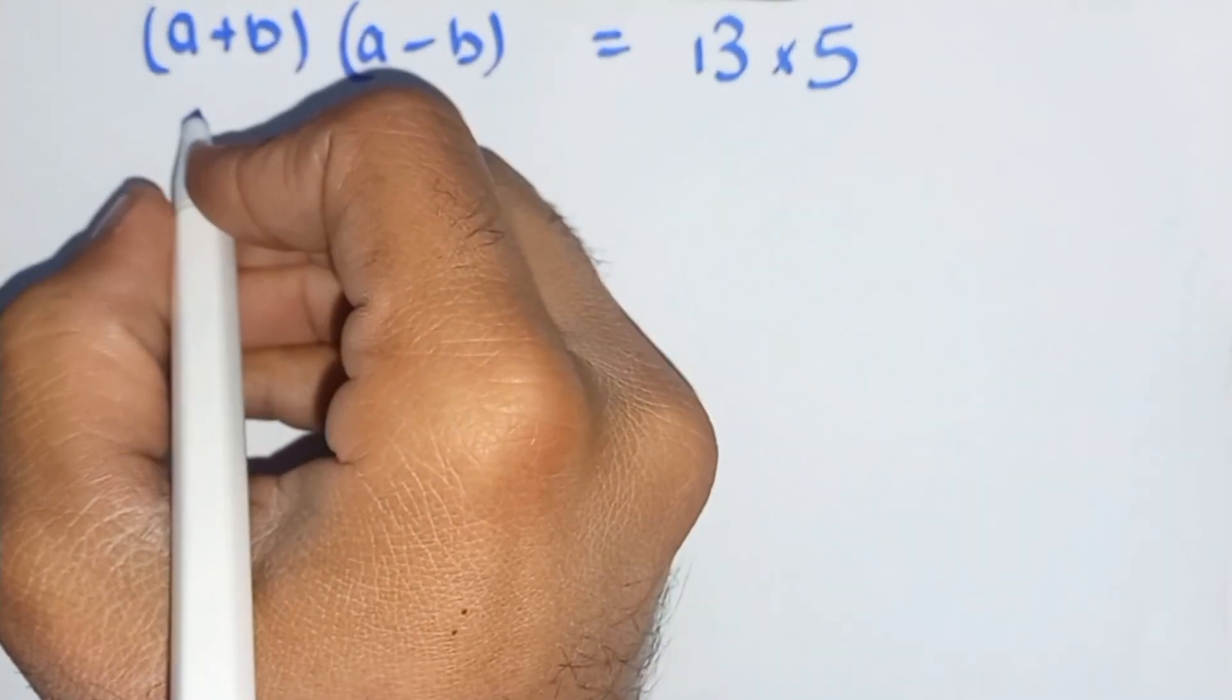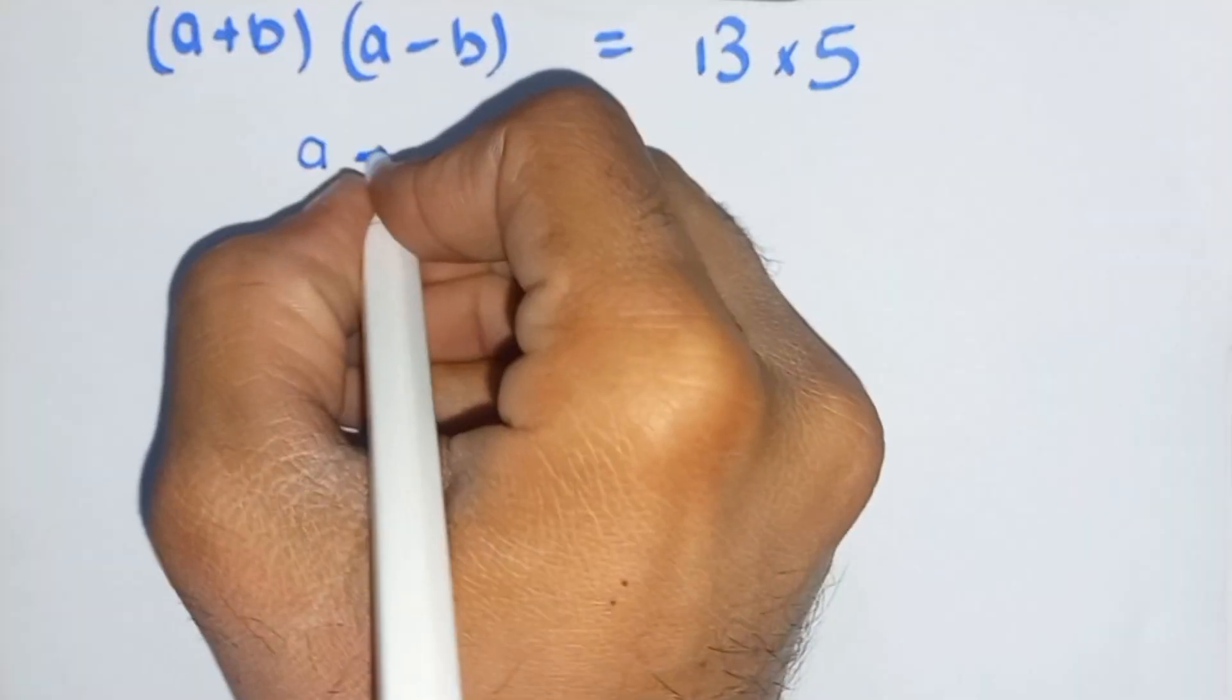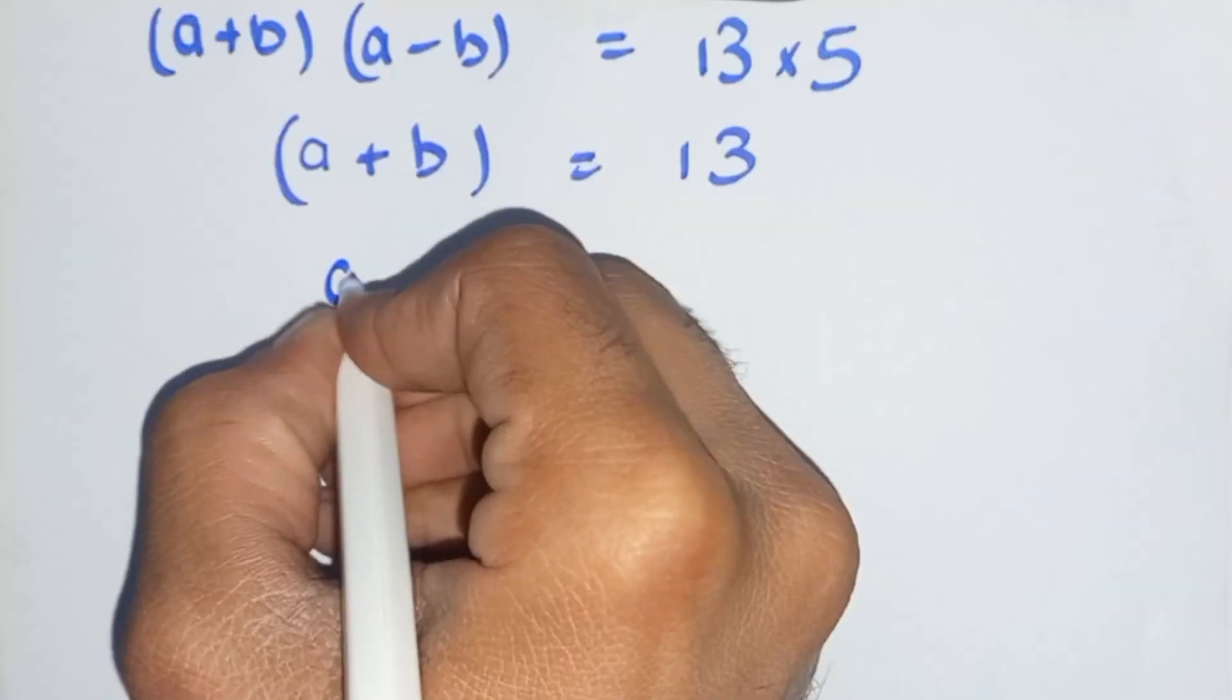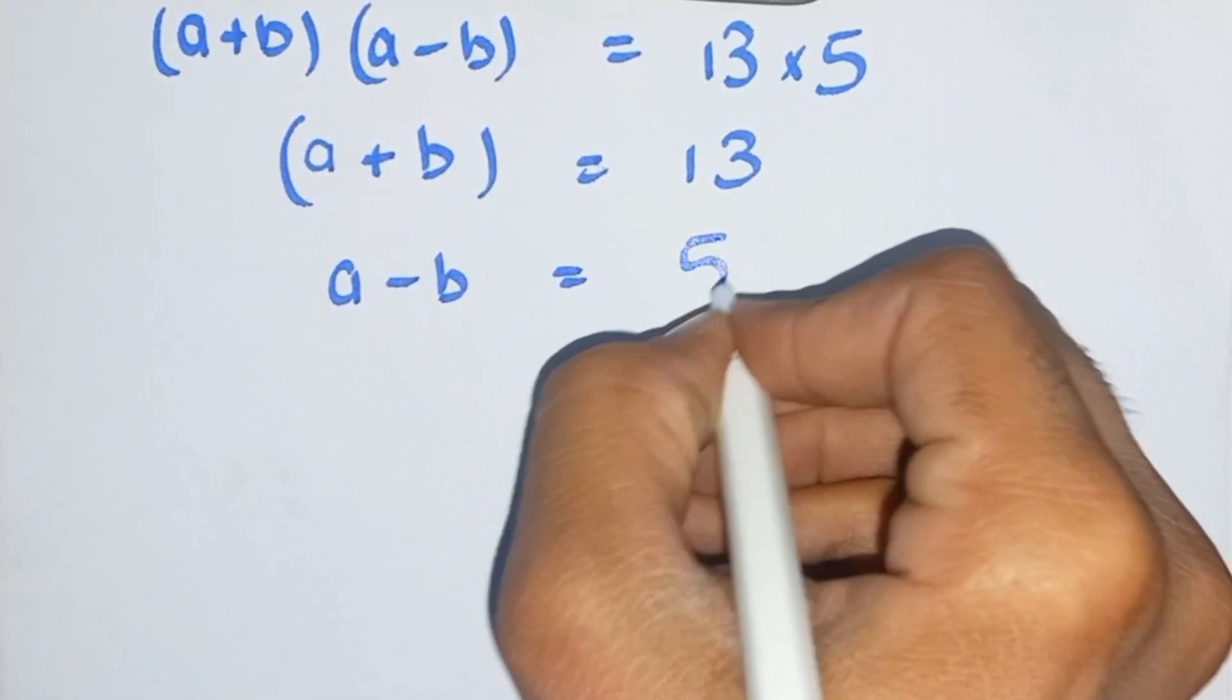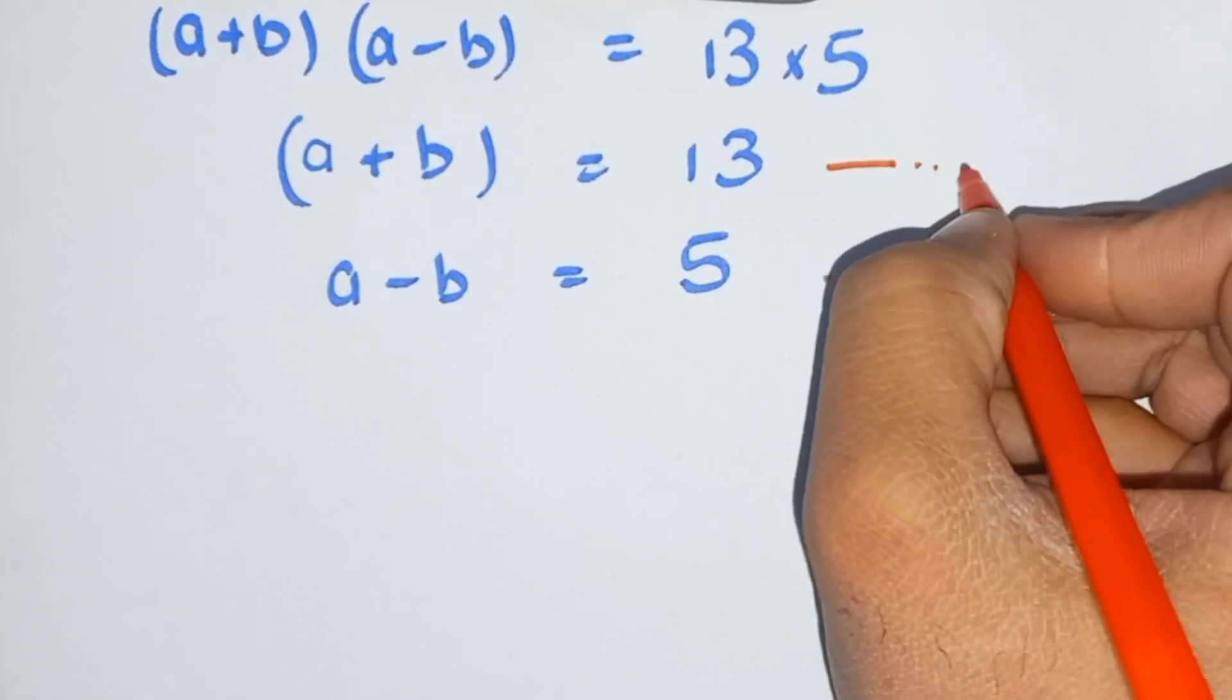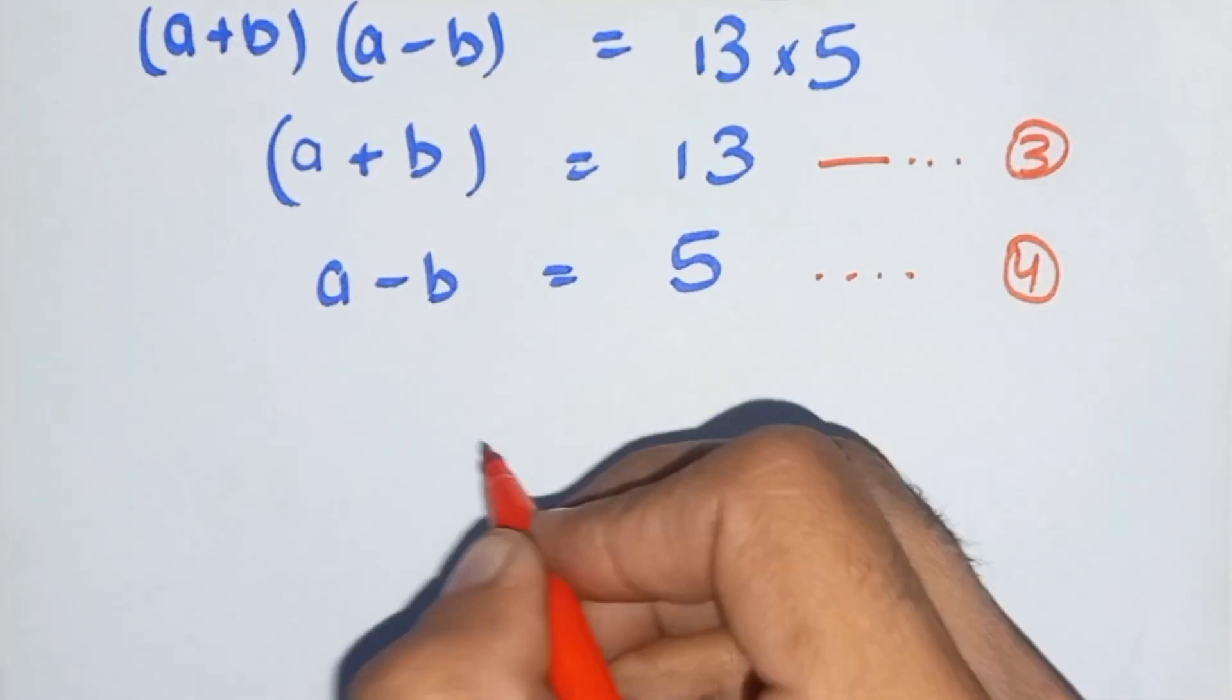Now comparing, the result is that a+b equals 13 and a-b equals 5. That is another equation, and we take this equation number 3 and 4.